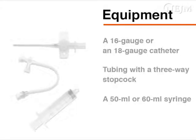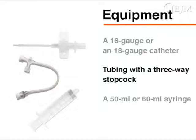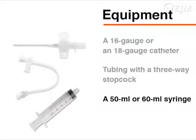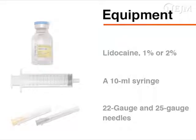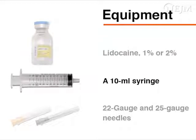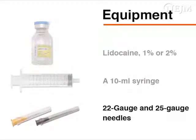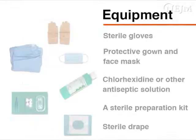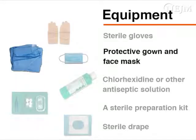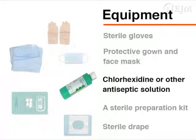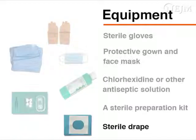Begin by gathering the necessary equipment. The equipment needed for aspiration includes a 16-gauge or 18-gauge over-the-needle catheter, tubing with a three-way stopcock, and a 50-milliliter or 60-milliliter syringe. To administer local anesthesia, you will need 1% or 2% lidocaine, a 10-milliliter syringe, and 22-gauge and 25-gauge needles. You will also need sterile gloves, a protective or sterile gown, a face mask, chlorhexidine or another antiseptic solution, a sterile preparation kit, and a sterile drape.